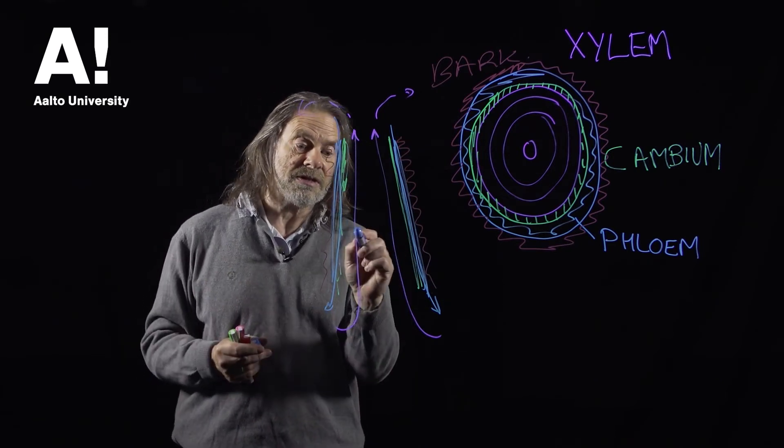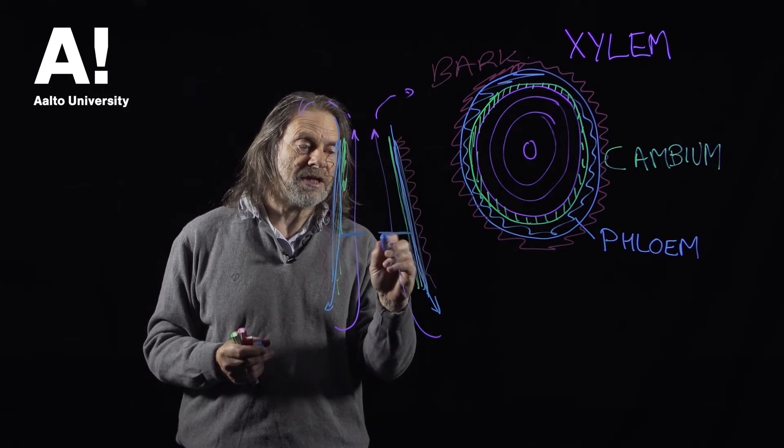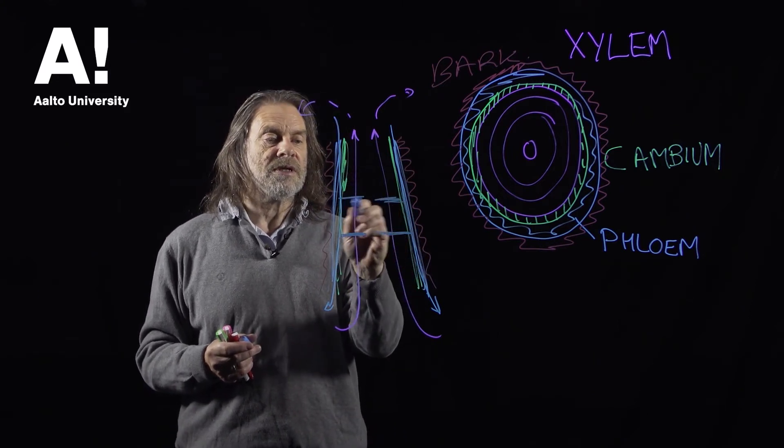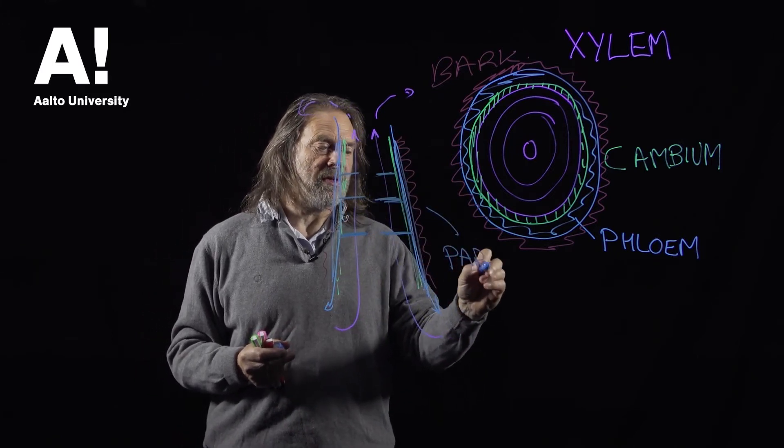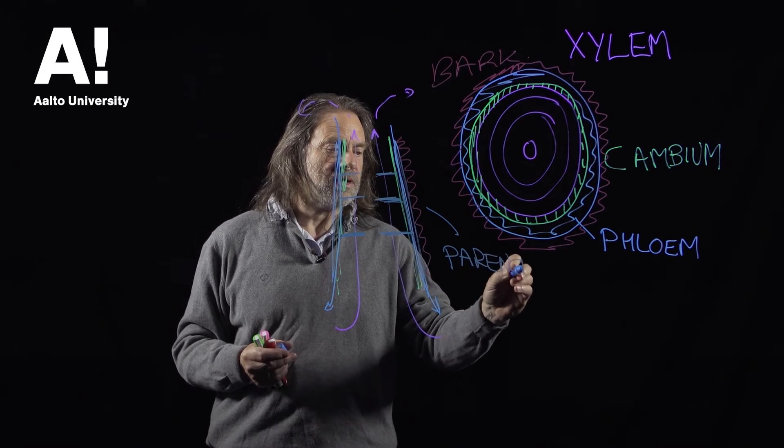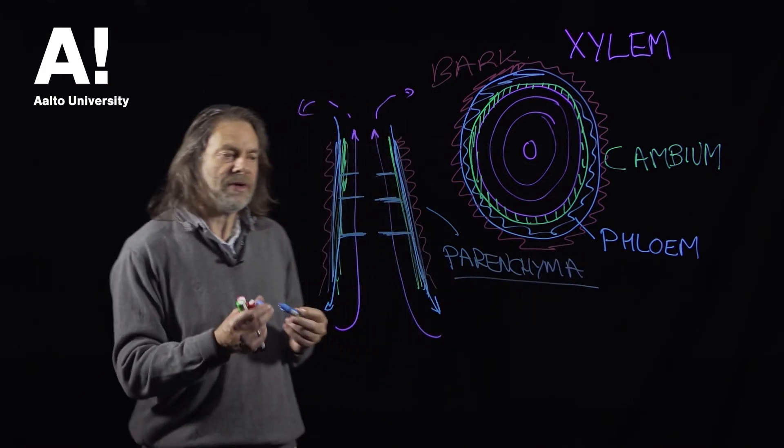And then in between these different types here, between the cambium and the xylem tissue, we have these conducting pathways of parenchyma cells. Apologies for using the same color twice, but I'm running out of pens here. Parenchyma cells,